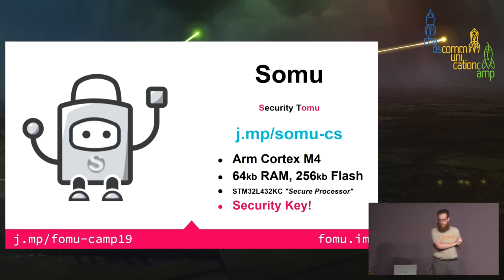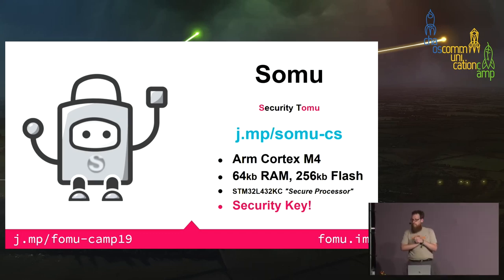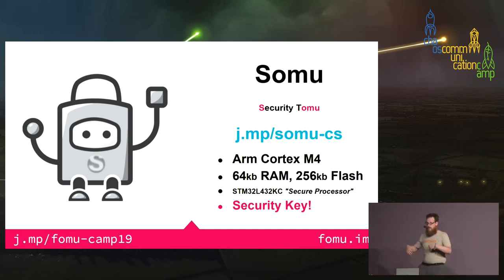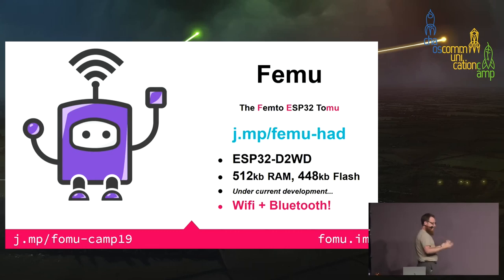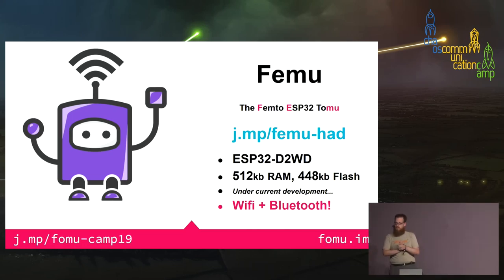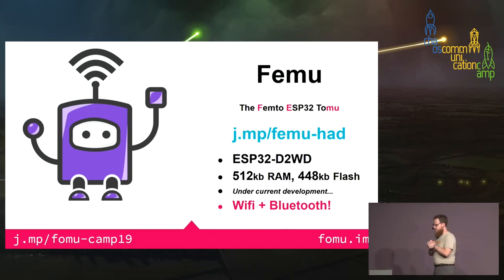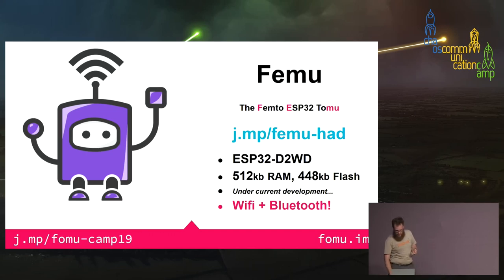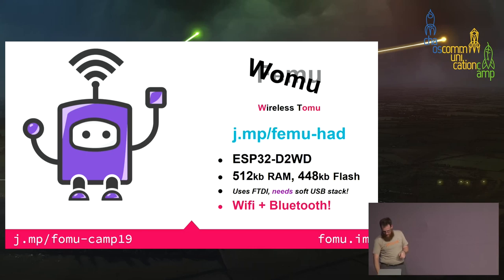There's another group called Solo Key who were interested in doing something similar. We talked to them and they developed the Somu — the Security Tomu — very similar to the original Tomu except it uses an STM secure microprocessor, giving more confidence as a security key. It has UF2 support and FIDO2 support. None of our systems had any way to communicate wirelessly, so I noticed this person called Femto who made really cool tiny beacons and suggested he make an ESP32 Tomu — and he did.